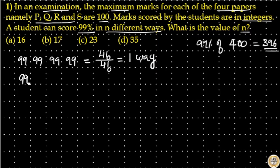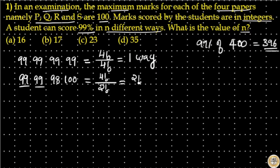If a student scored 99 in two subjects, 98 in another subject, and 100 in another subject, that means total elements is 4. So 4 factorial divided by 2 factorial (since 99 is repeated two times) equals 2 factorial times 3 times 4 divided by 2 factorial, which is 3 times 4 equal to 12 ways.